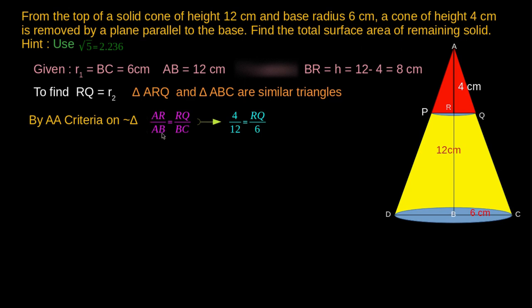Therefore, AR by AB equals RQ by BC, i.e., 4 by 12 equals RQ by 6. Therefore, RQ equals R2 equals 2 cm.